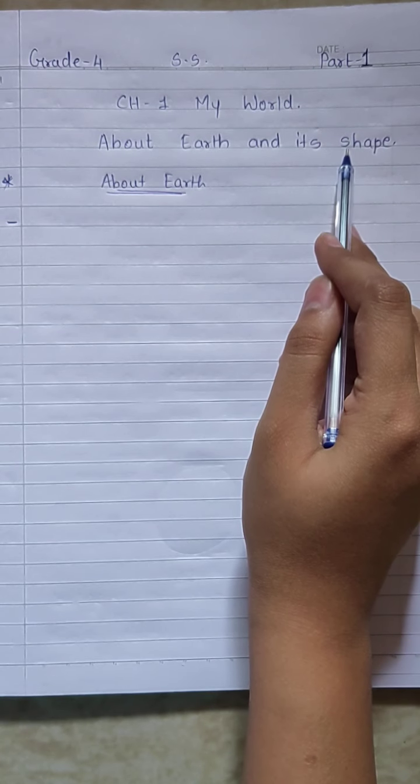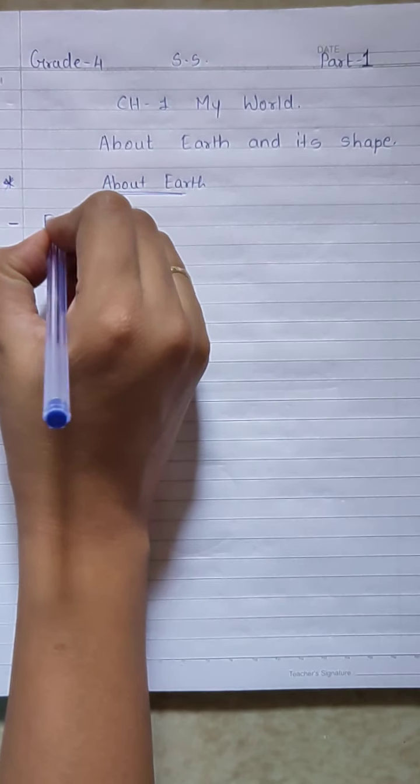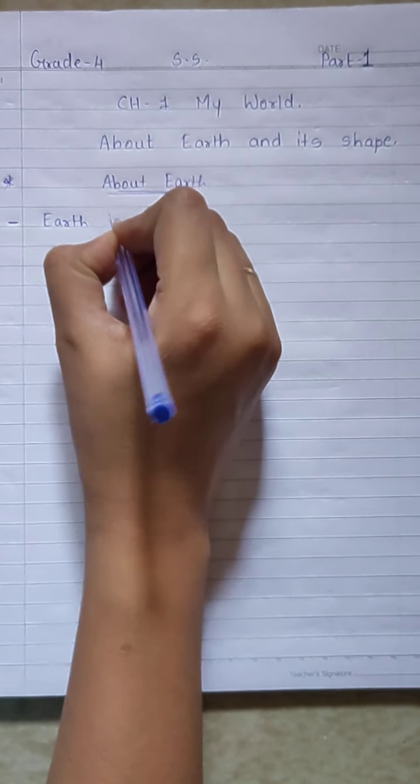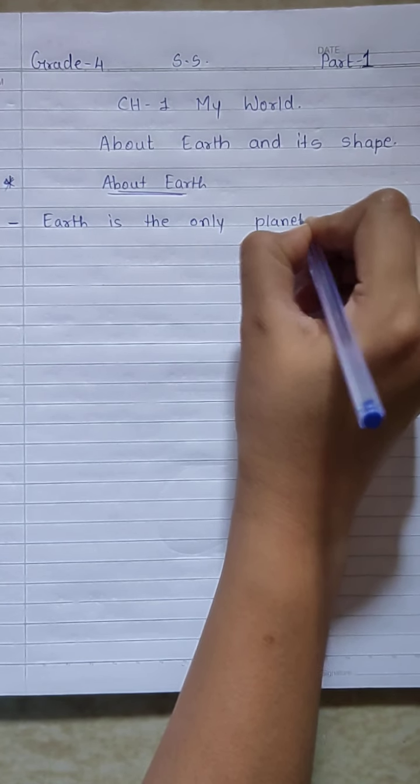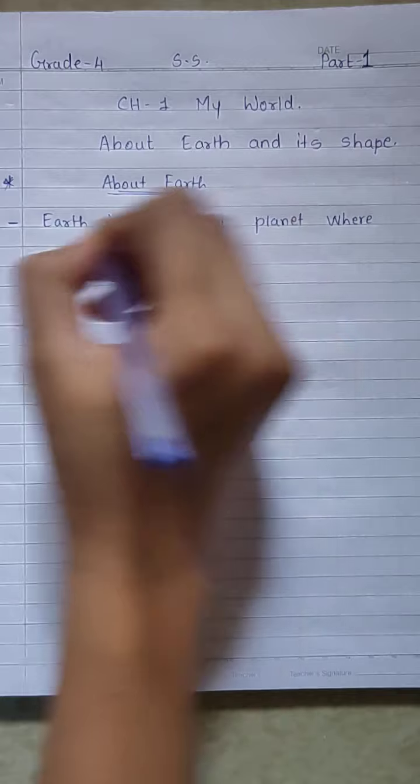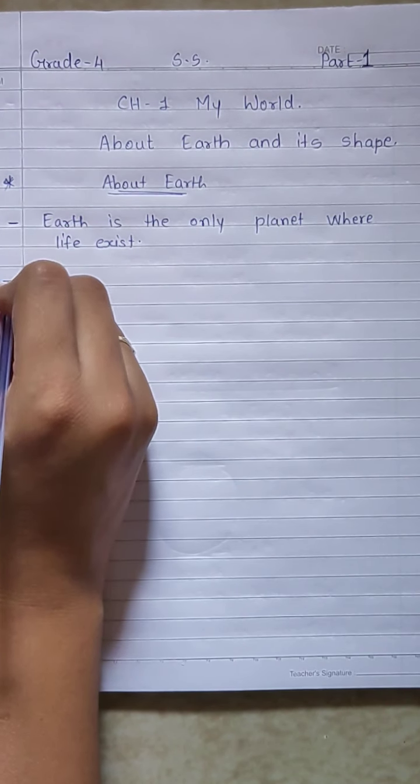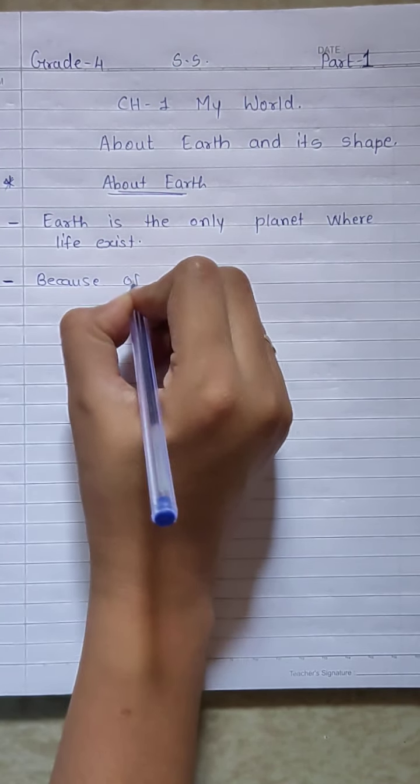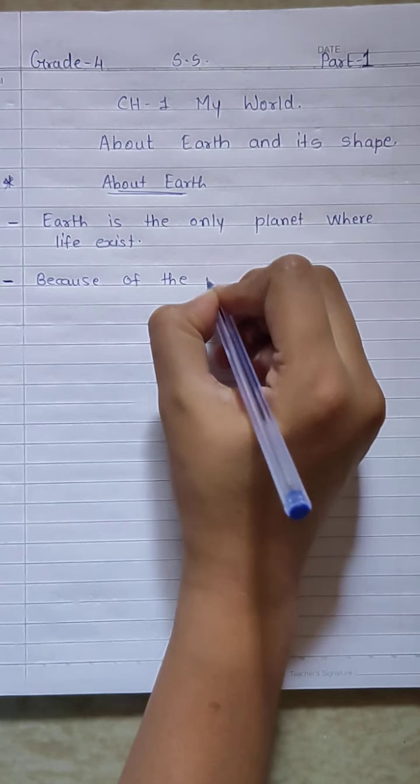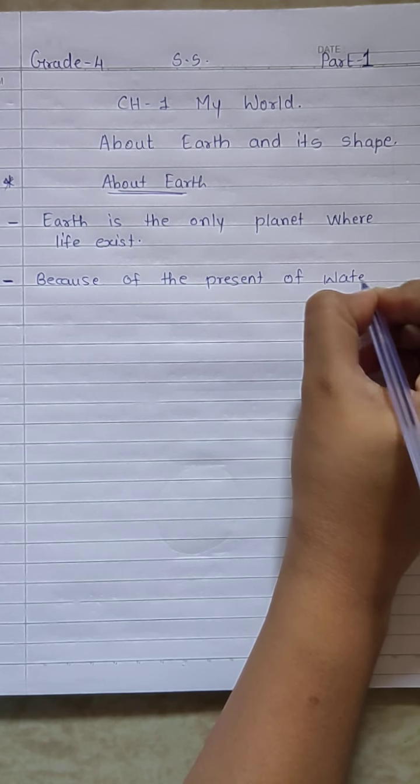So today we are going to discuss about the earth and its shape. So first we will talk about the earth. Earth is the only planet where life exists. How does life exist? Because of the presence of water and air.